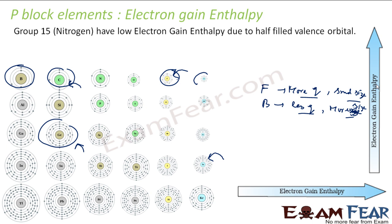But there are two exceptions. The first is group 15, the Nitrogen family — they have low electron gain enthalpy. The first question to ask is: why does an atom try to attract an electron at all? Because it wants to attain stability. Atoms try to attract electrons to gain stability, and that is why electron gain enthalpy is almost always negative — energy is given out. Since Fluorine has only one electron deficiency, it will try to attract an electron all the more. That is why Fluorine has more electron gain enthalpy as compared to Bromine.